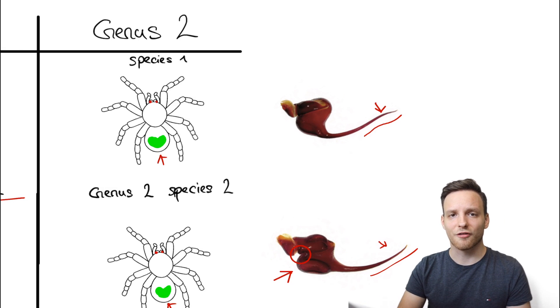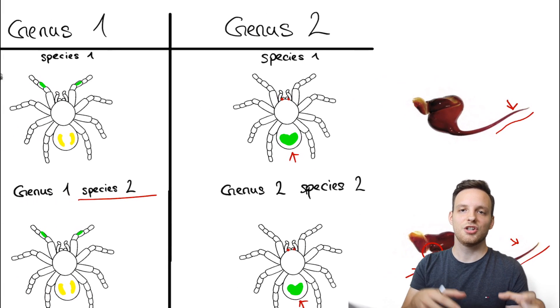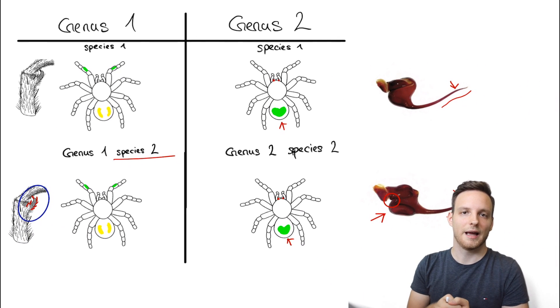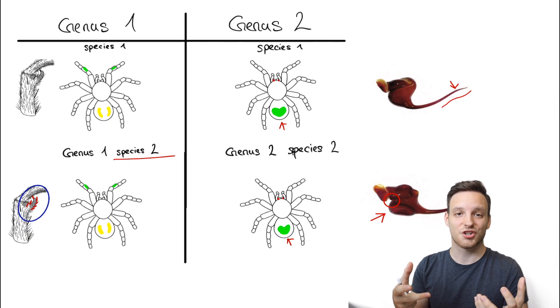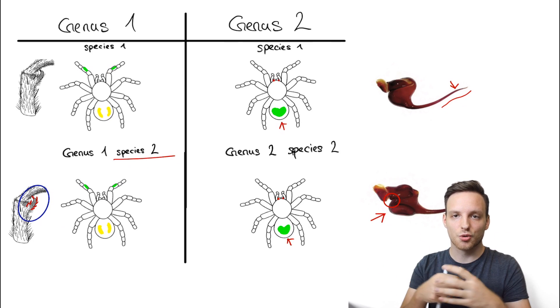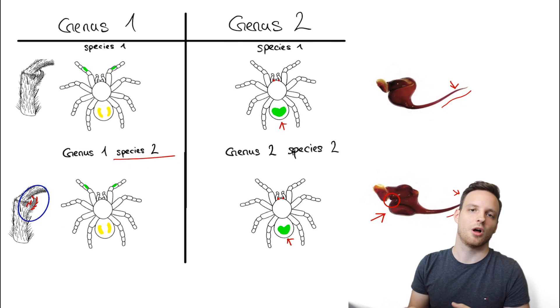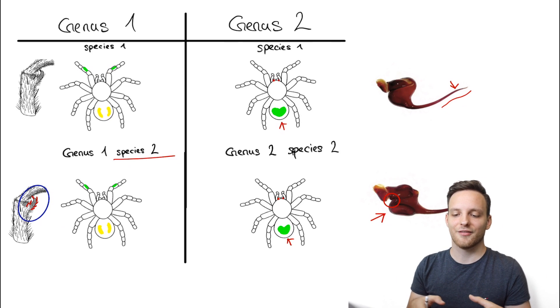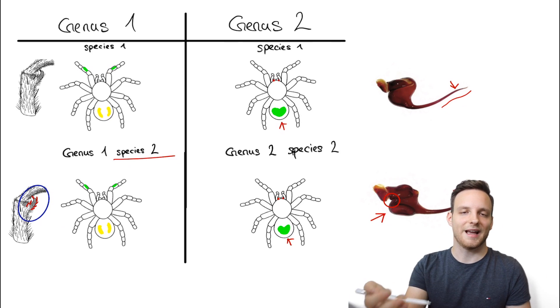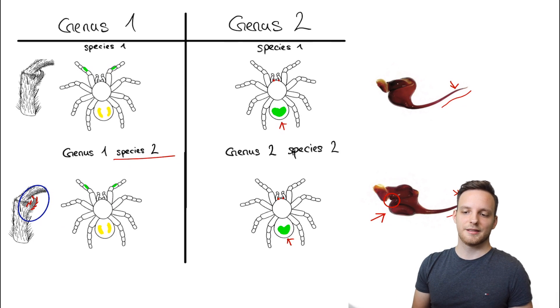These are all fossorial tarantulas from Southeast Asia but they do have each and every single one their own features, morphological features which this species group shares. For example all Haplopelma have distinctive features together just as in this example. So another example is this.